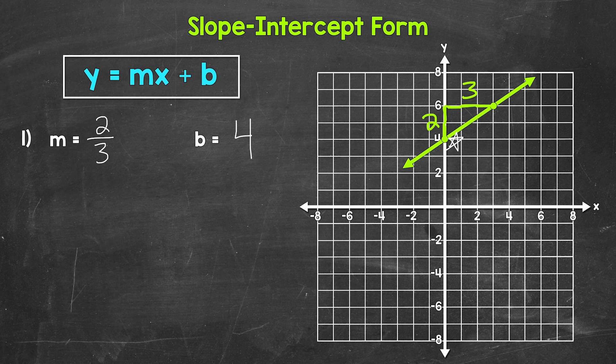Now we plug 2 thirds in for m and 4 for b. So our equation for this line is y equals 2 thirds x plus 4. And that's it — that's our equation.